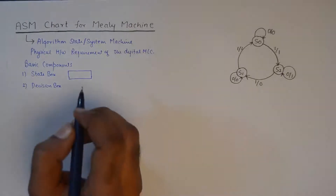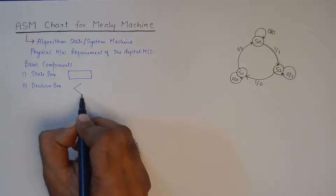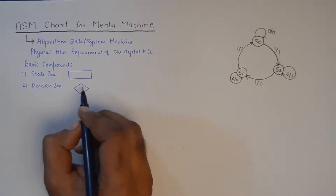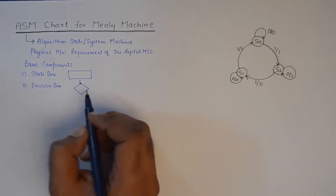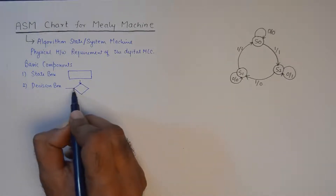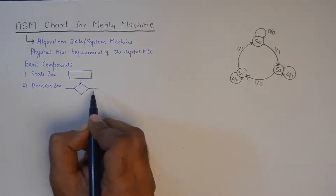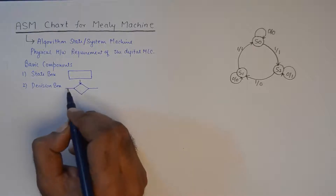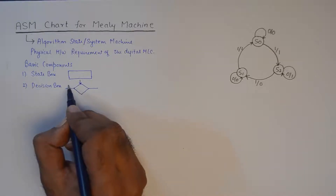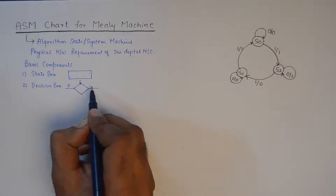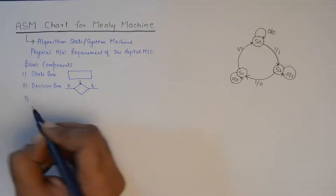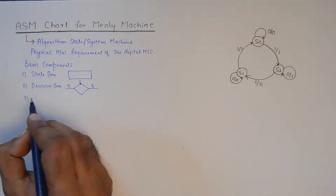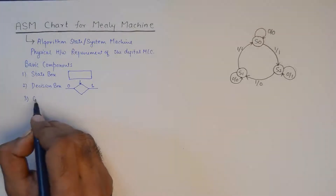Then you would need a decision box, which is symbolically represented using a diamond shape or a rhombus shape. The transition comes from the top, and the two branches are the decision-making branches — one will be a zero or false condition and the other will be a one or true condition. Thirdly, in a Mealy machine you would need a conditional box.